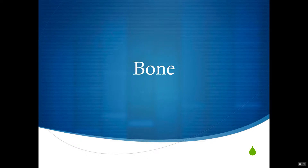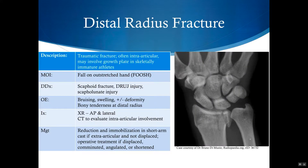Let's get started with bone injuries. Distal radius fractures are common in athletes and in the general population, most commonly from falling on an outstretched hand, or FOOSH for short, with an extended wrist. In kids, these fractures can involve the growth plates as well. With that mechanism, you'd also want to rule out a scaphoid fracture, distal radial ulnar joint injury, and scapholunate injury. Sometimes these can also occur concurrently.